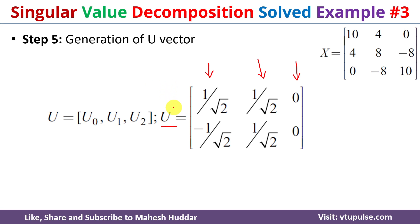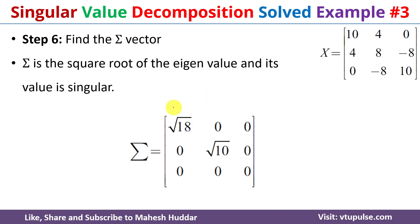The next step is to find the sigma matrix, which is the singular matrix. The sigma values are the square roots of the eigenvalues placed diagonally: the first entry is √18, the second is √10, and the third eigenvalue is 0.